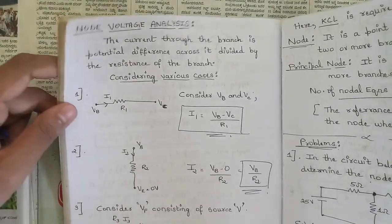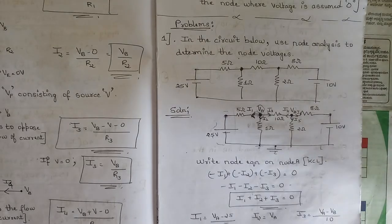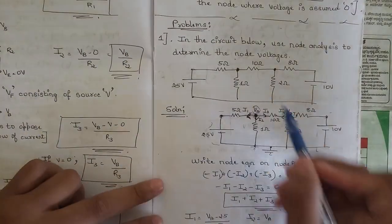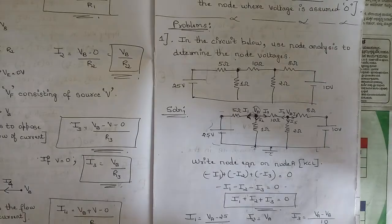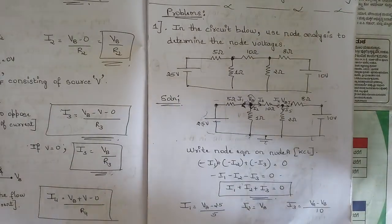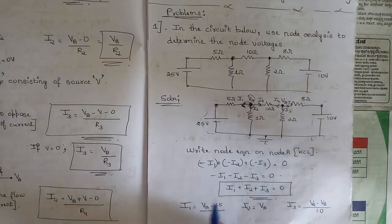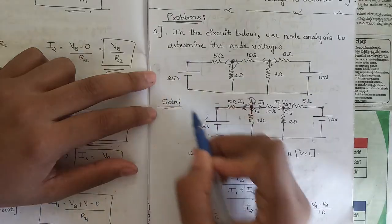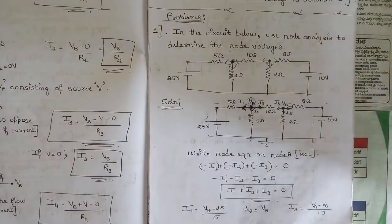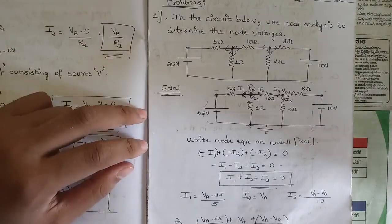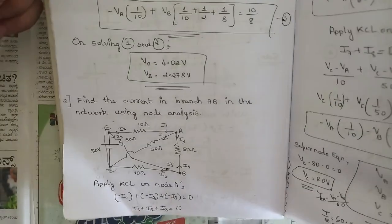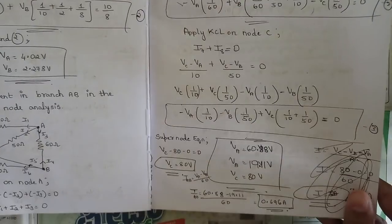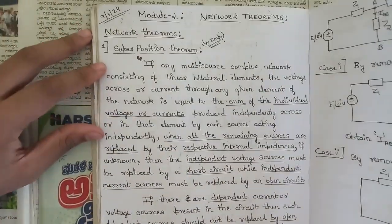One question on node analysis is also fixed. In node analysis, two nodes are marked in the given circuit and we apply KCL — Kirchhoff's current law — to find voltages. Mark the direction of branch currents, use I = V/R for each branch, and solve for the node voltages. Please refer the two node analysis problems shown here, as they are very important.